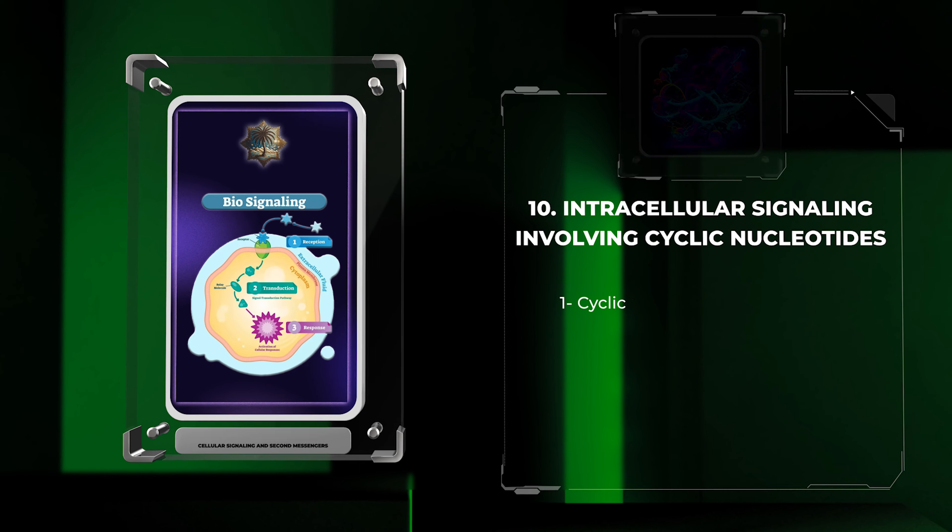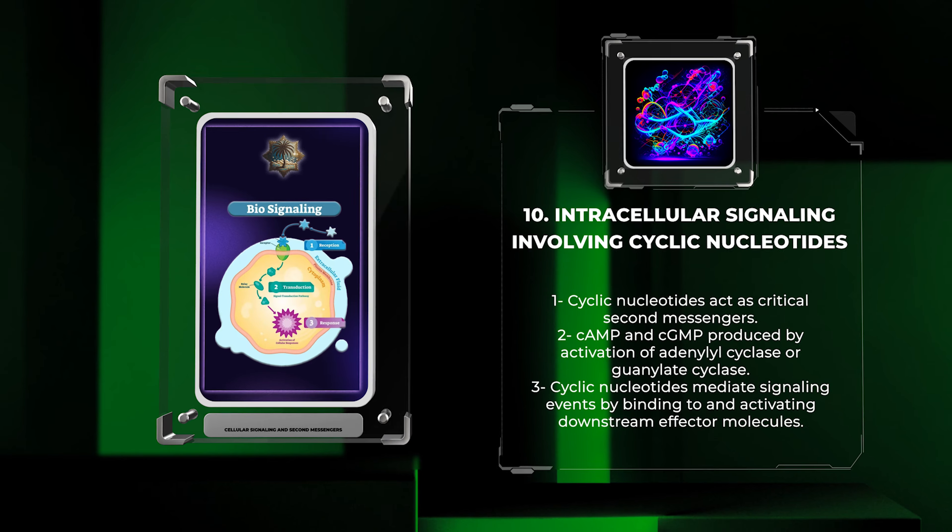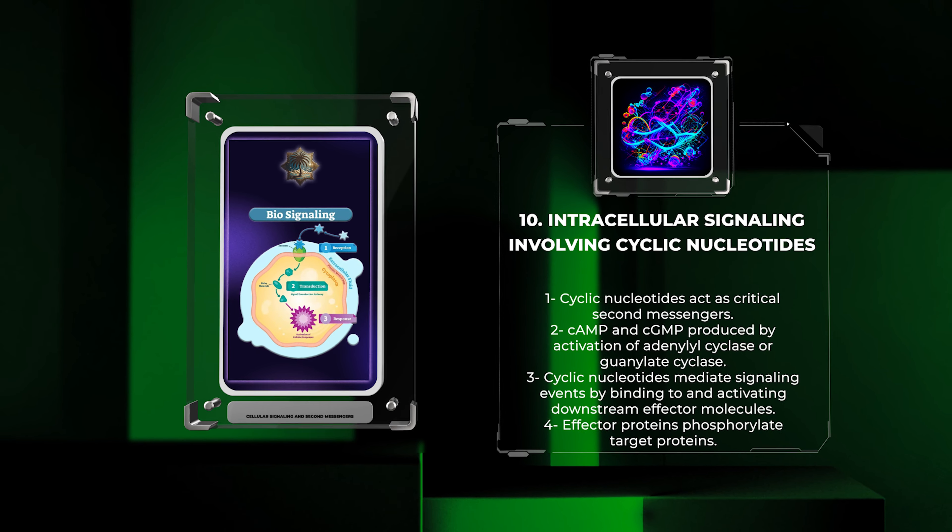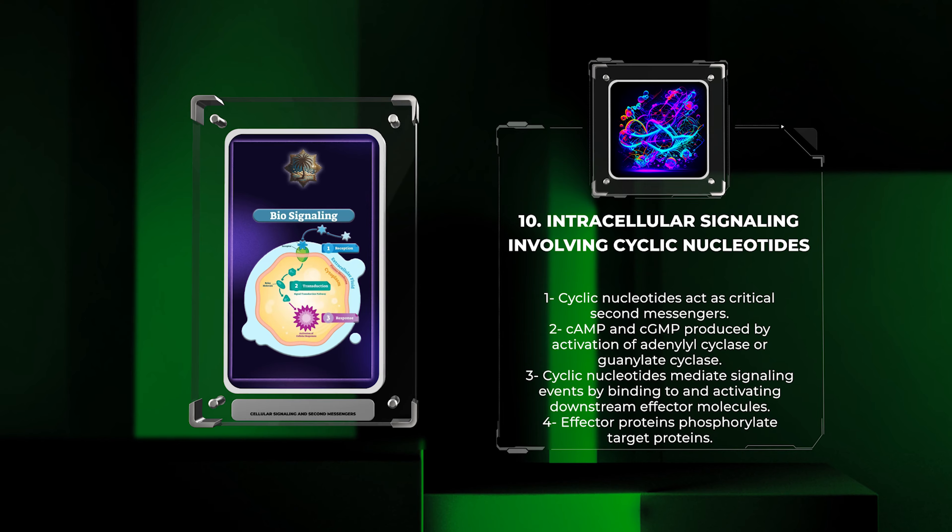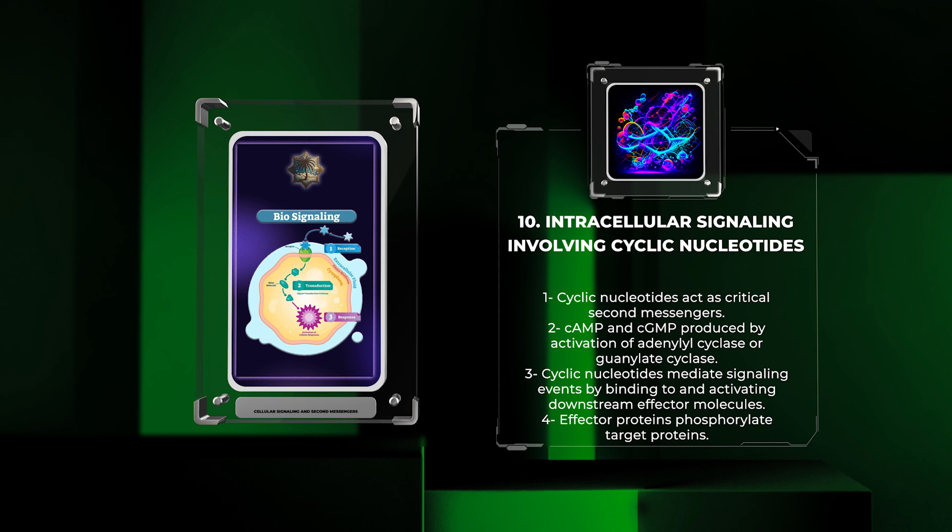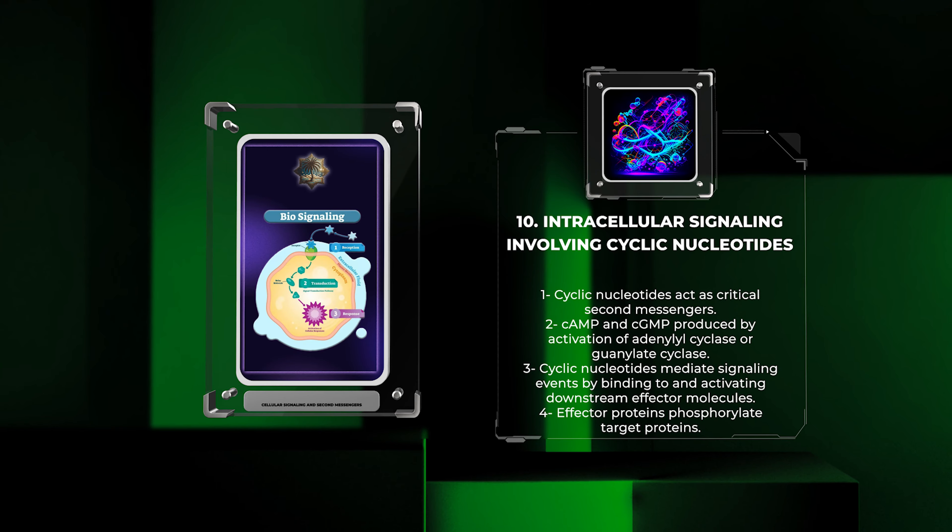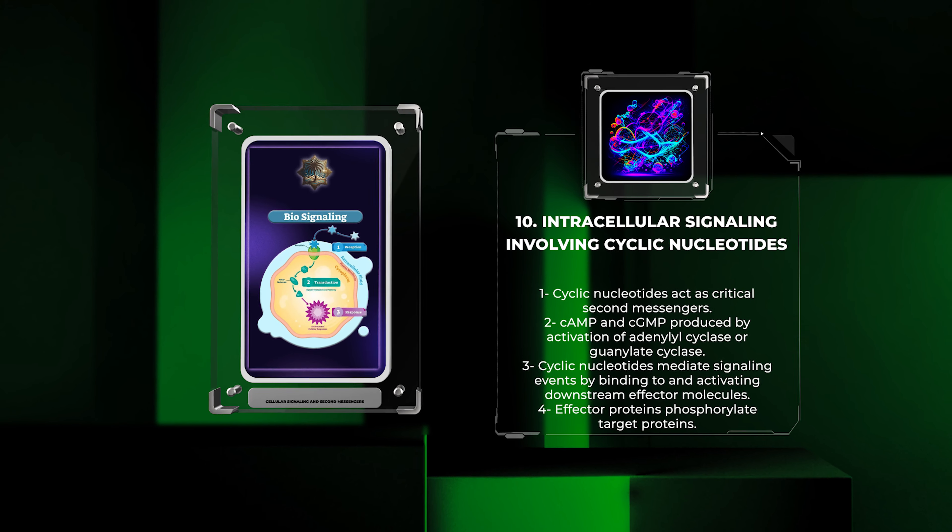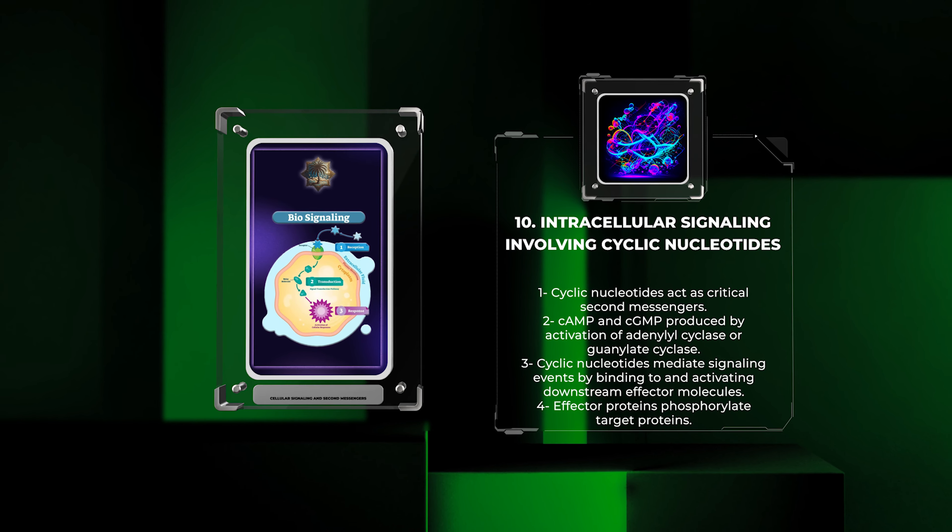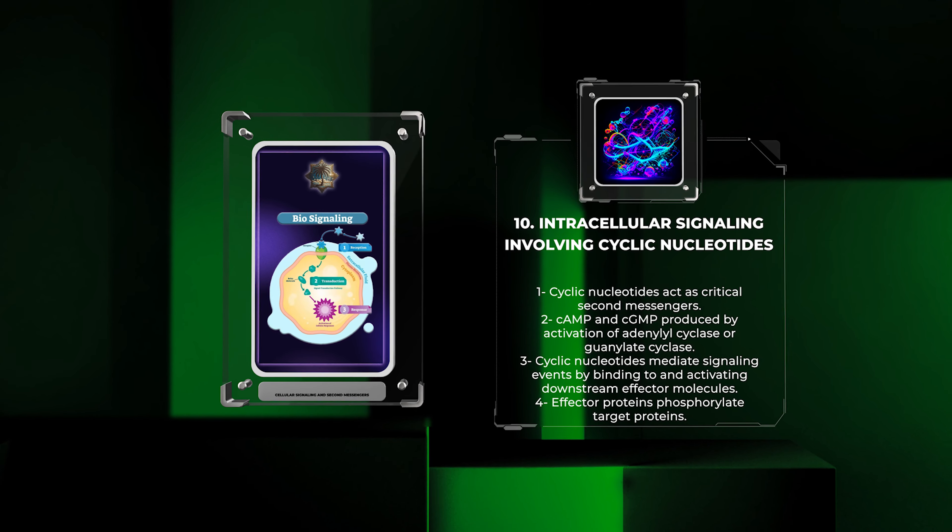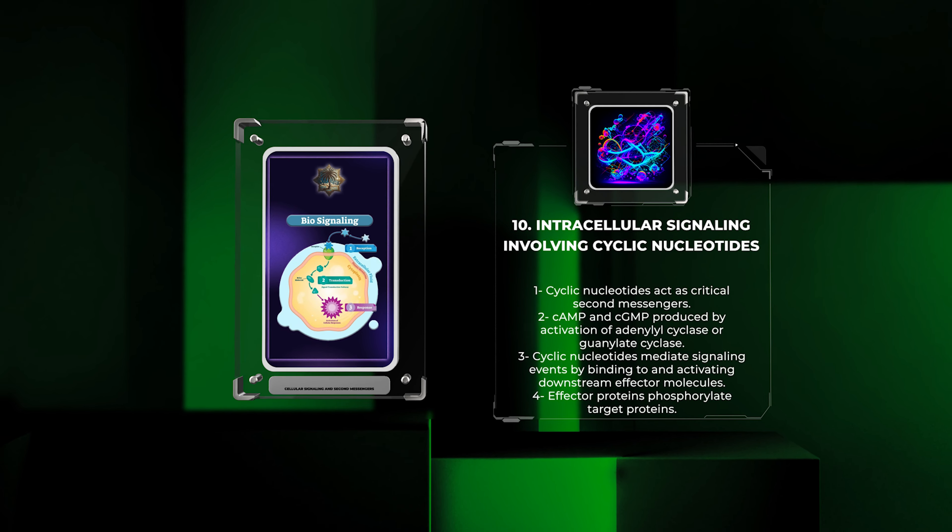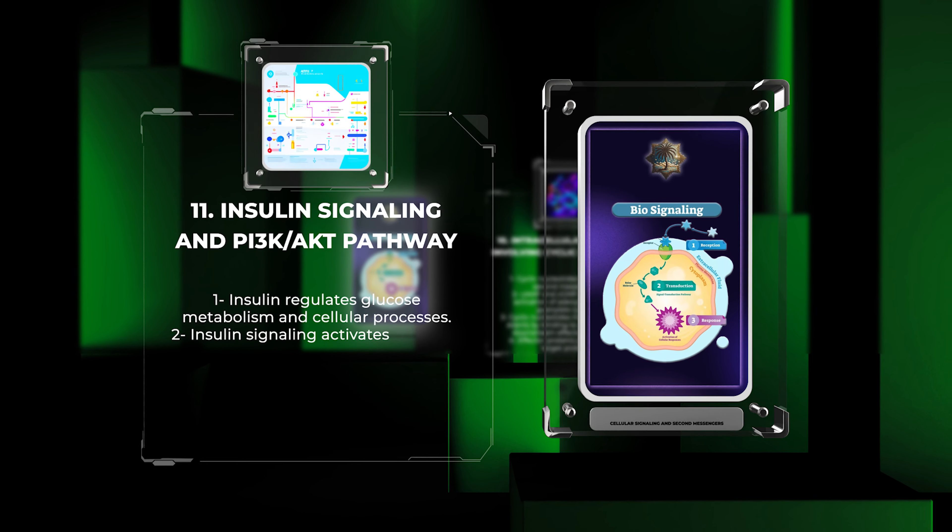Cyclic nucleotides, such as cAMP and cGMP, act as critical second messengers in multiple signaling pathways. They are produced by the activation of adenylyl cyclase or guanylate cyclase enzymes, respectively. Cyclic nucleotides then mediate signaling events by binding to and activating downstream effector molecules, such as PKA or PKG. These effector proteins phosphorylate target proteins, initiating a cascade of intracellular events leading to diverse cellular responses.